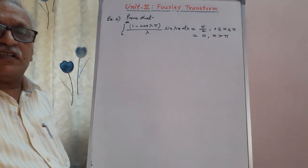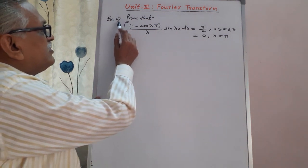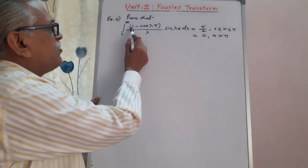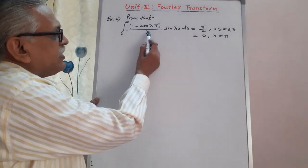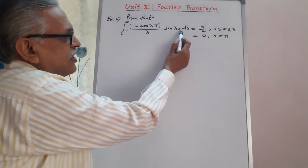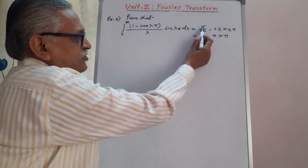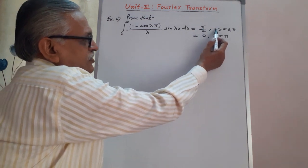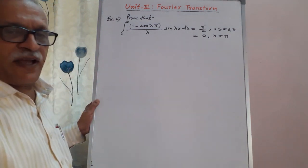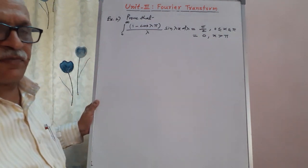Example number 2: prove that integration from 0 to infinity of (1 − cos(λπ))/λ × sin(λx) dλ equals two values — first, π/2 for x in the range 0 to π, and second, 0 for x greater than π.